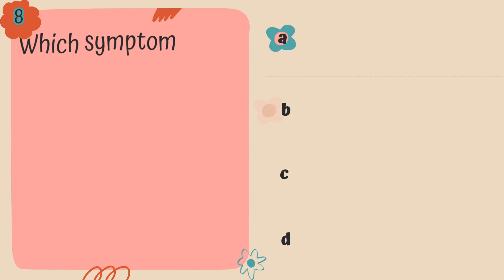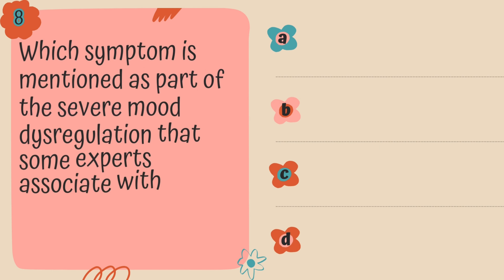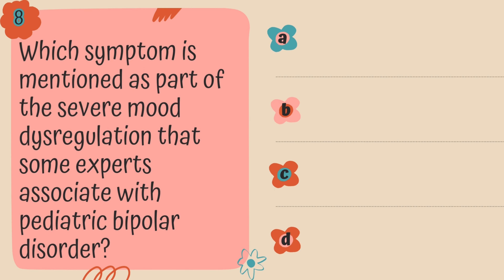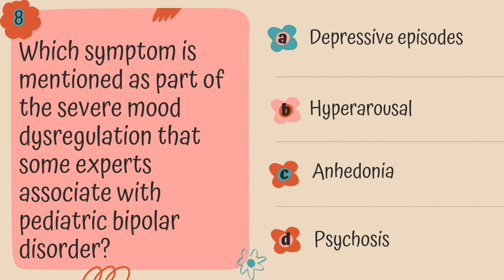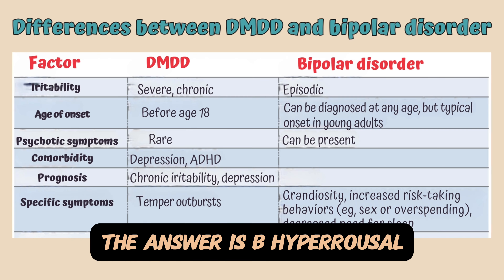Question 8. Which symptom is mentioned as part of the severe mood dysregulation that some experts associate with pediatric bipolar disorder? Is it A. Depressive episodes, B. Hyperarousal, C. Anhedonia, or D. Psychosis? The answer is B. Hyperarousal.